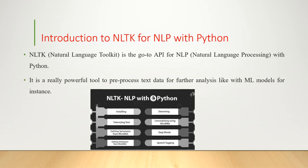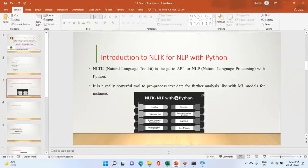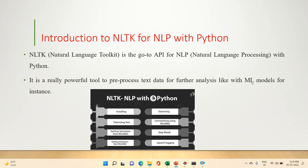NLTK is a really powerful tool to pre-process text data for further analysis, like with machine learning models for instance. It helps to convert text into numbers which the model can then easily work with. So if we are going to solve NLP problems and practical problems, what do we need to do first?